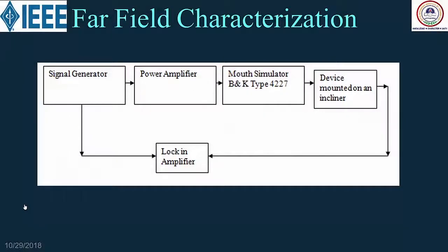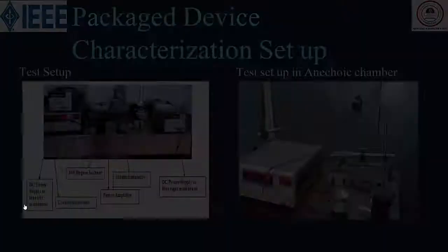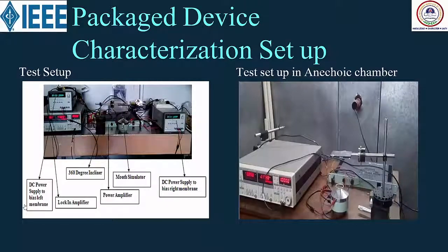For far-field characterization, a mouth simulator was needed since humans speak at around 2–5 kHz and the microphone should be tested at a realistic speaking distance. Professor Rudra Pratap's lab provided the setup using a mouth simulator and lock-in amplifier. The device was mounted on an incliner, tilted at different angles, and tested for directionality. The lock-in amplifier readings in current were converted to capacitance using Ohm's law.